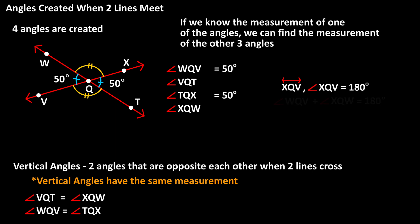With this, we know that angle WQV plus angle XQW equal 180 degrees. So angle XQW will equal 180 degrees minus angle WQV, which is 50 degrees. 180 degrees minus 50 degrees equals 130 degrees. So angle XQW equals 130 degrees.